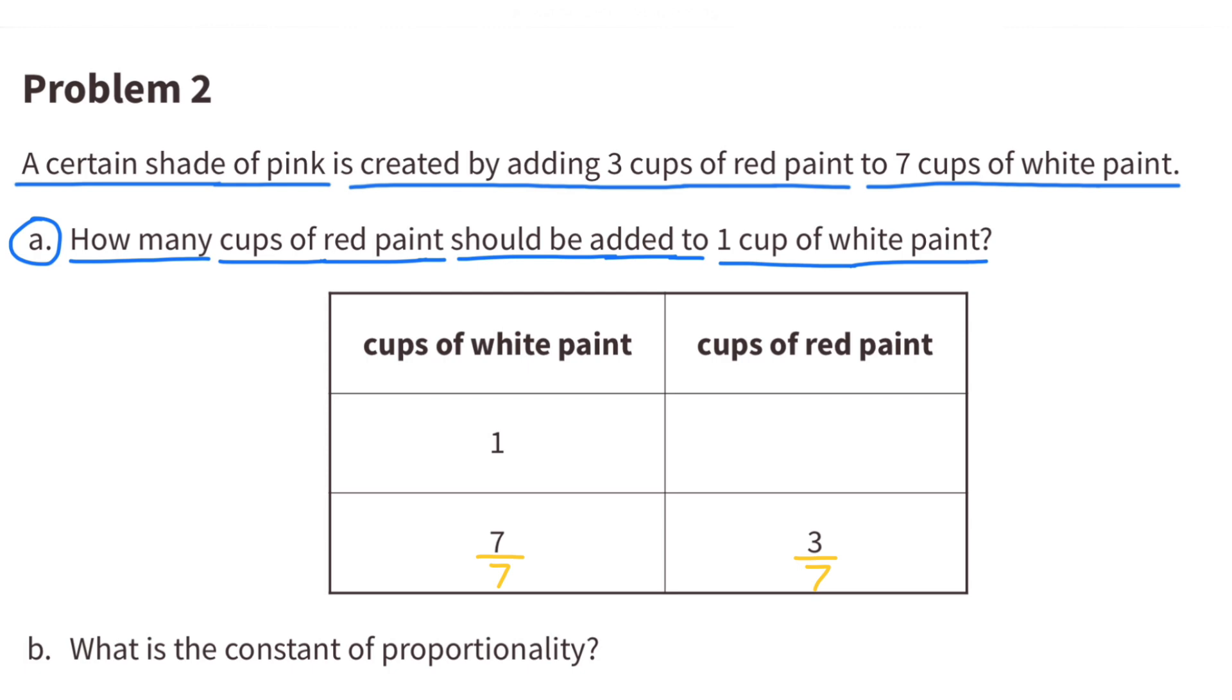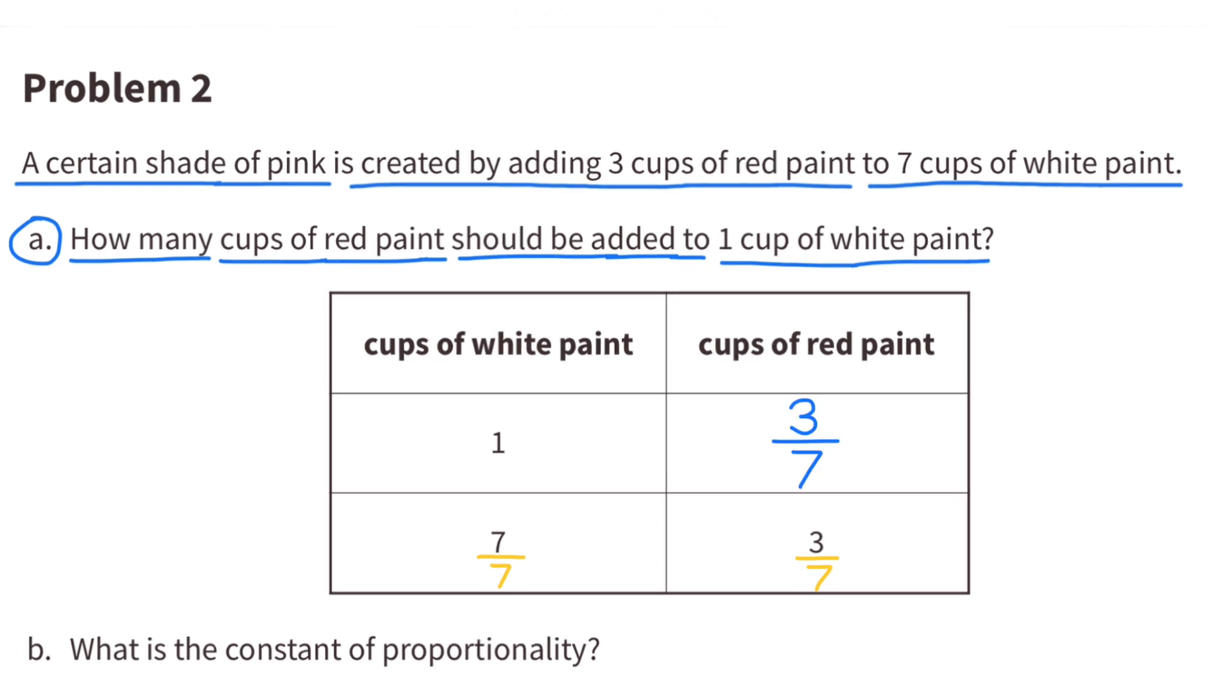7 cups of white paint divided by 7 equals 1 cup of white paint, and 3 cups of red paint divided by 7 equals 3 sevenths cups of red paint.